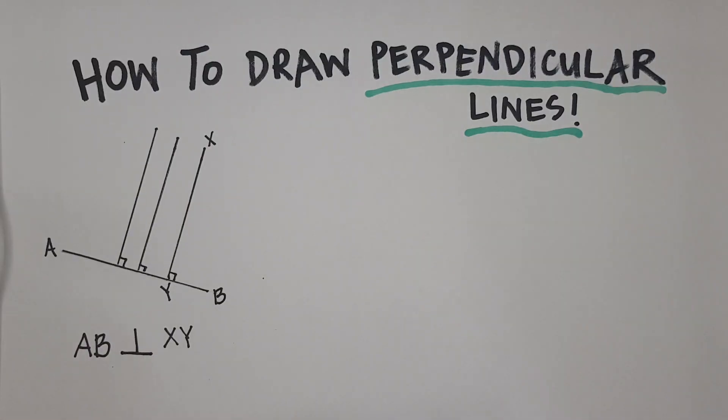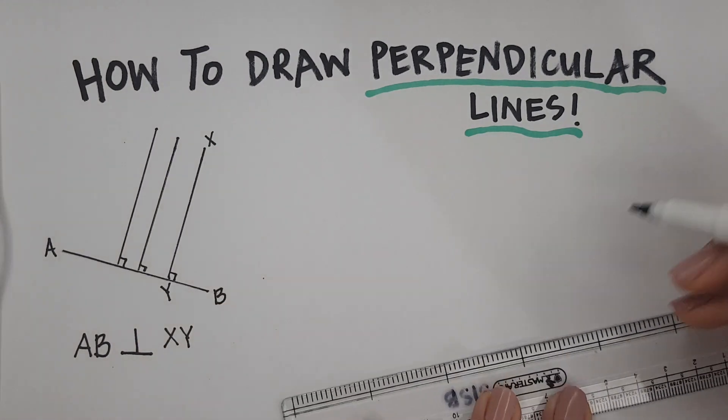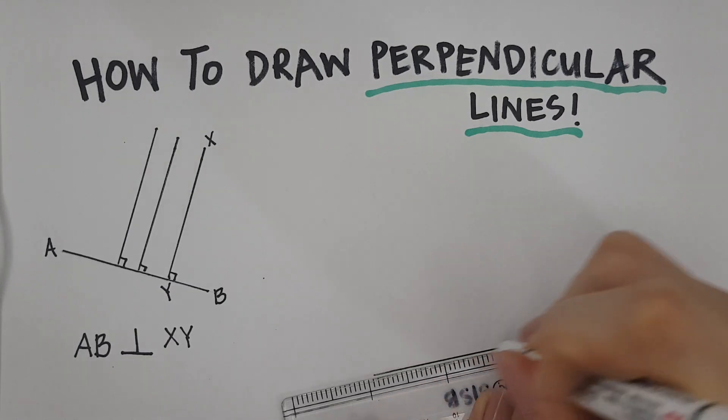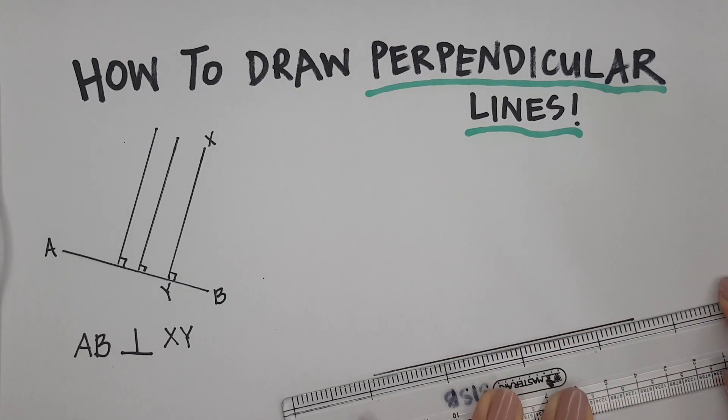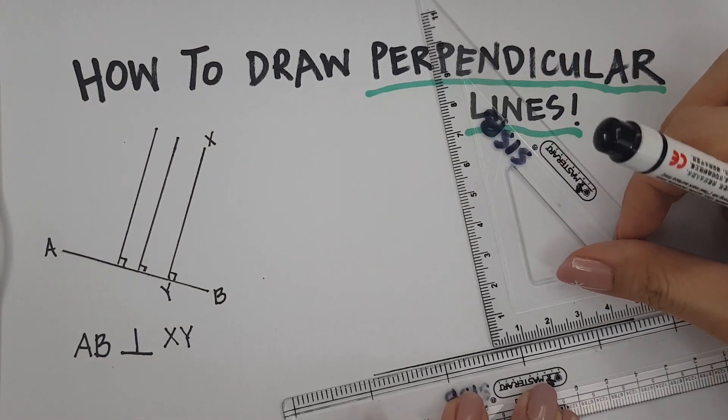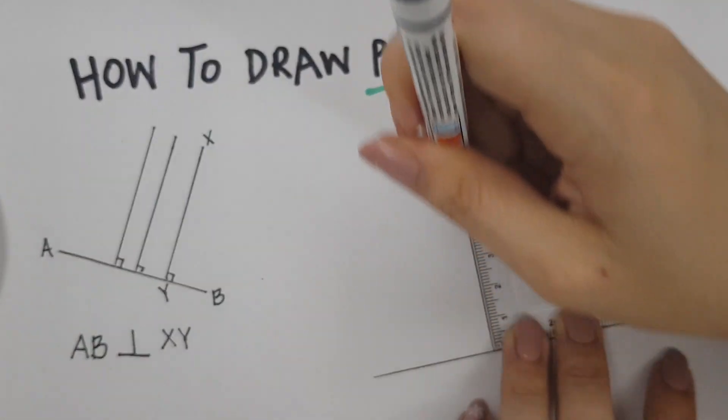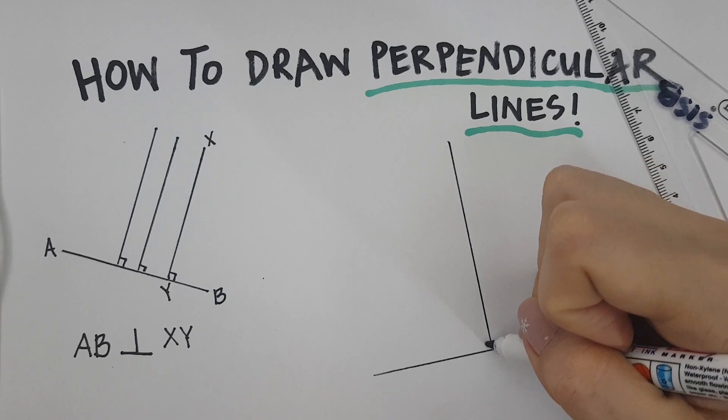Now, what happens if nothing is given and they ask you to draw two perpendicular lines? We always have to start with a line. So, here's what I'm going to do. I'm going to draw a perpendicular line. And for those of you who have the set square, you can just put it there on the line and draw a perpendicular line.